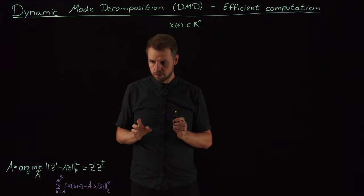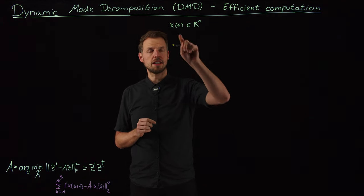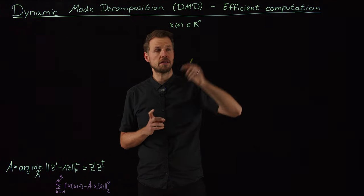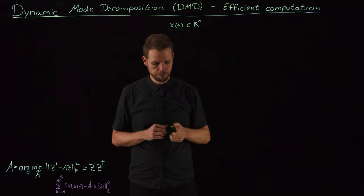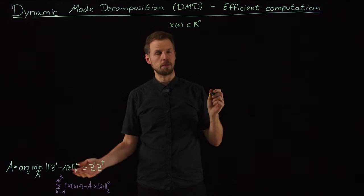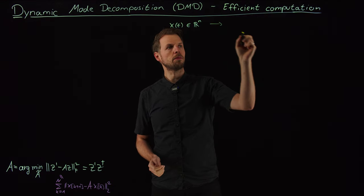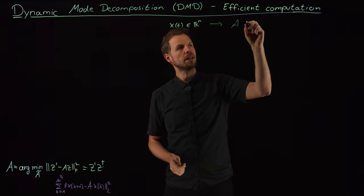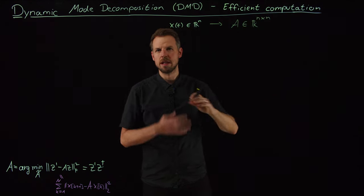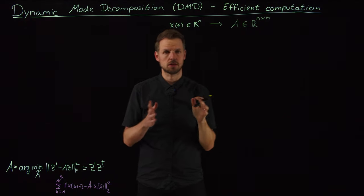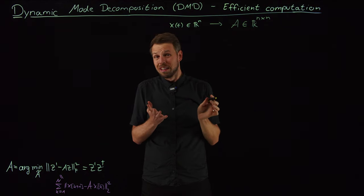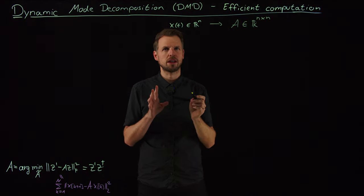Here's the problem: what if my state x at time t is very high-dimensional? Let's say n is a million. Then A is a quadratic matrix mapping x at time k to x at time k+1, and A has dimension n by n — that's a million by a million, or even larger. This is very, very costly. So do we really need this? That is the question we'd like to address here.